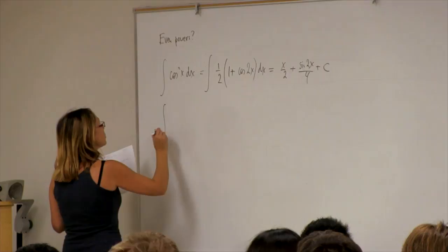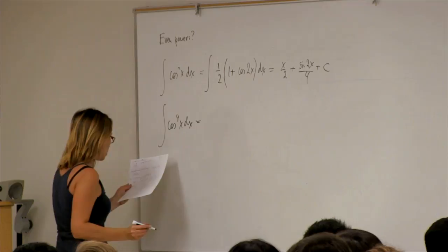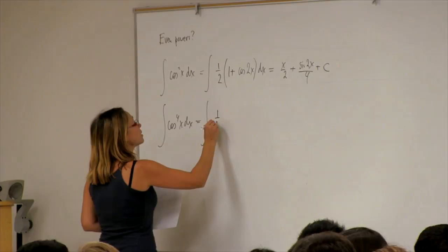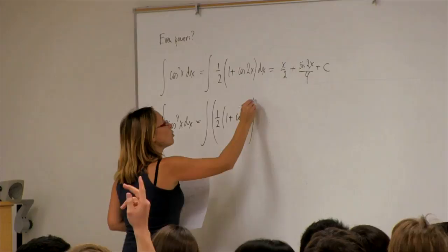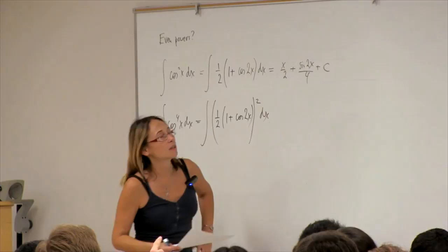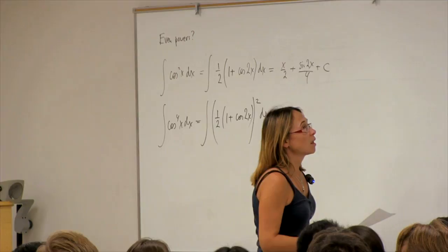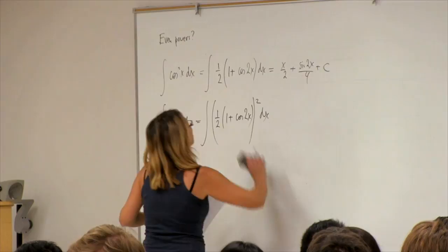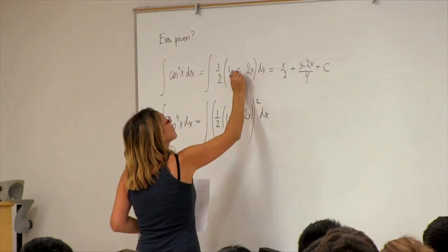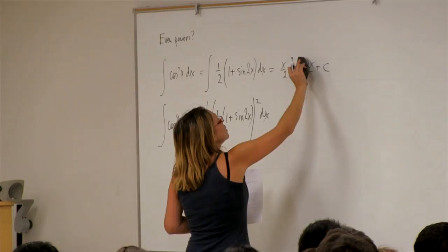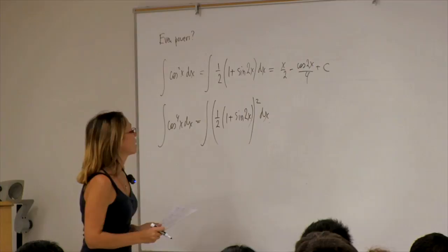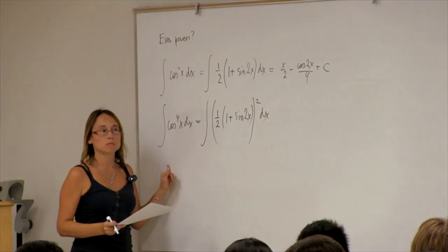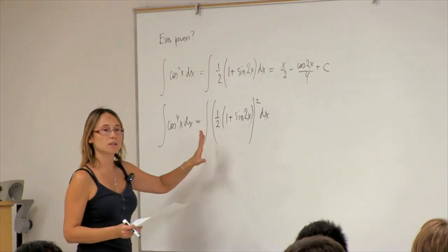Let's look at the more complex one: the integral of cosine fourth x dx. I use the same identity — cosine squared equals one-half times 1 plus cosine 2x — and I square the whole thing to get the fourth power. A student confirms the sine/cosine correction, thank you. The fourth power is the same thing squared; for the sixth power I would raise the formula to the third power. I can handle any even power using one of these half-angle formulas.